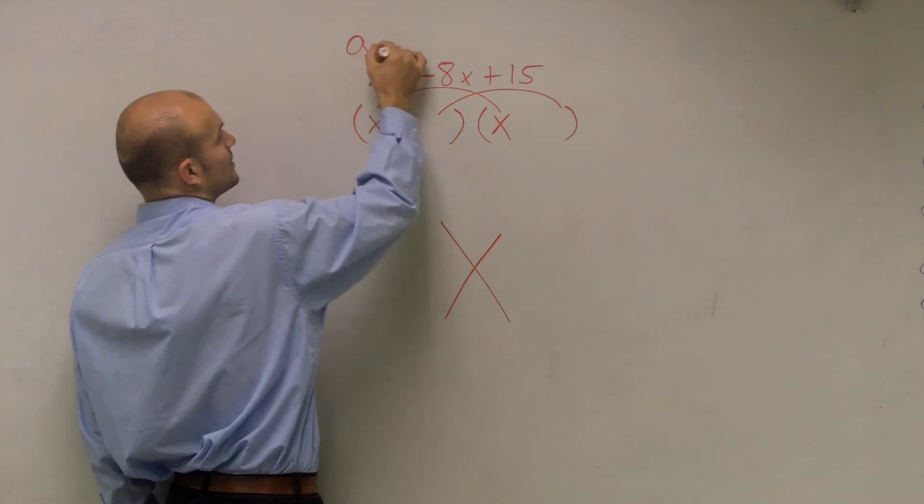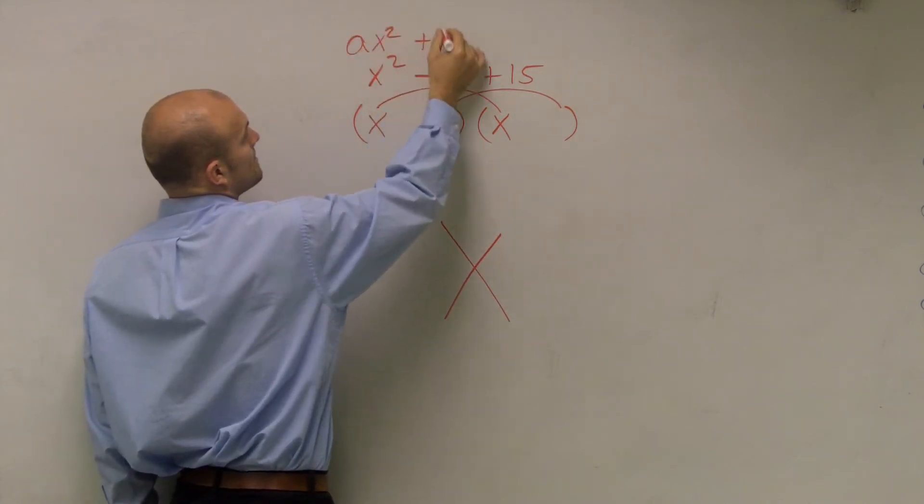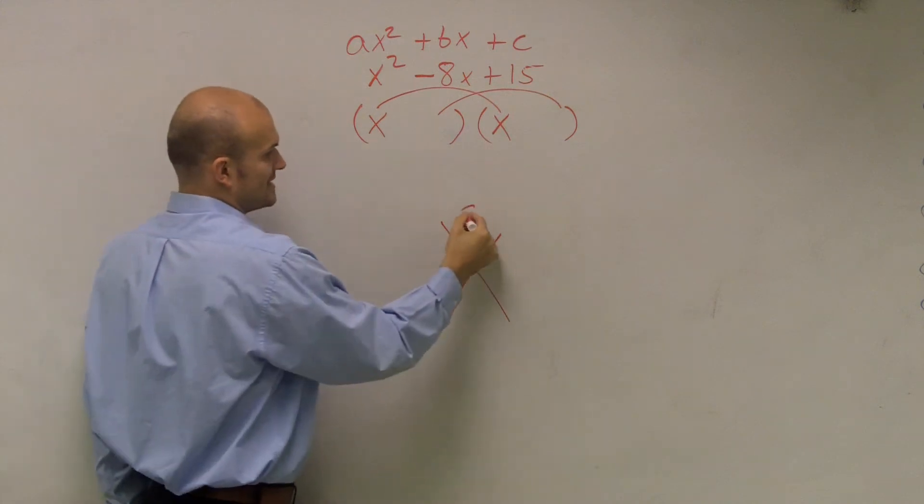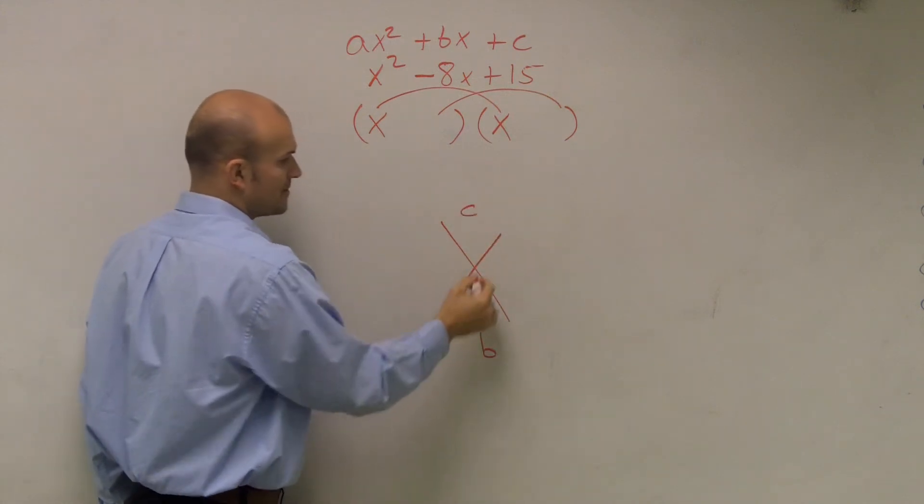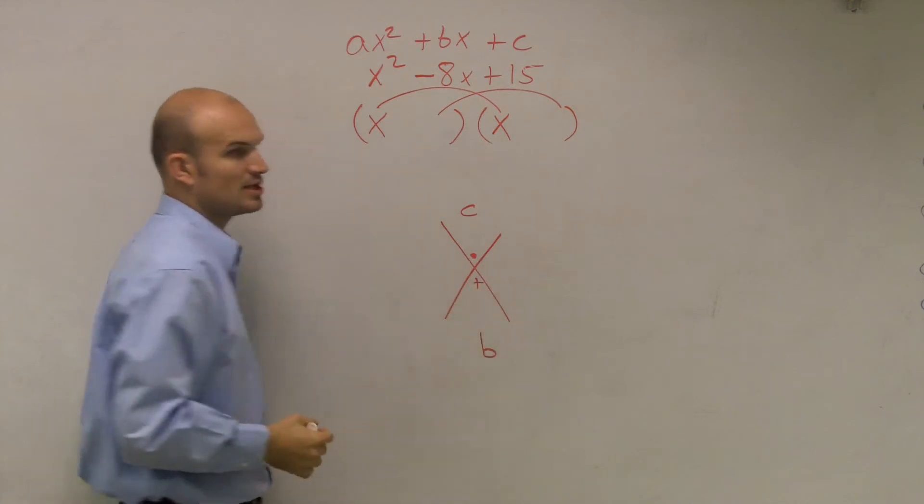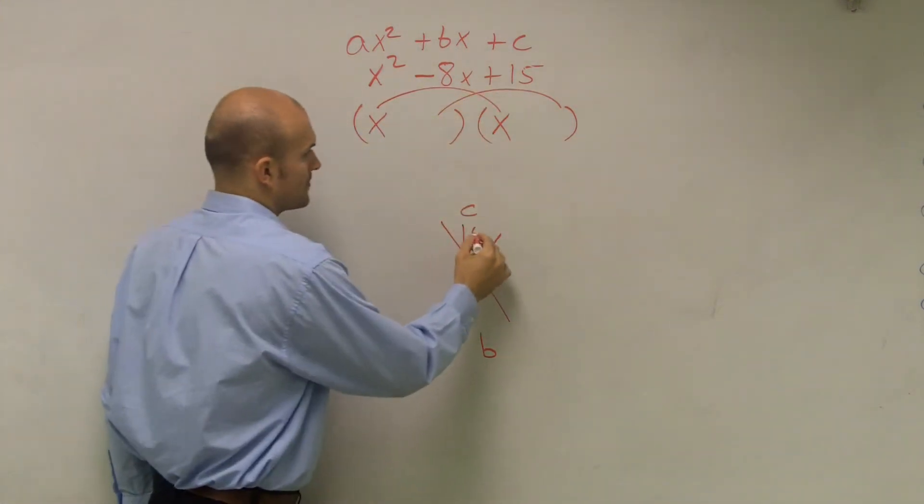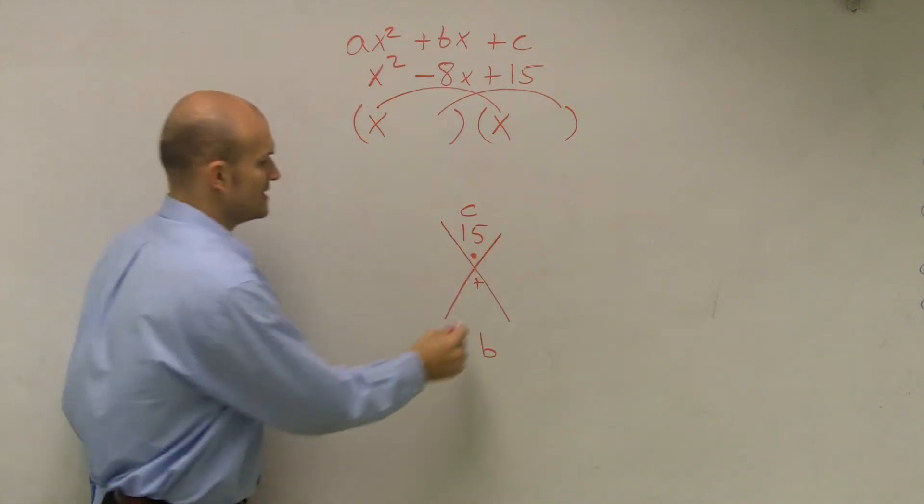So I gave you guys a little format to look at. And I told you, remember the quadratic form. So therefore, I told you to write c up here, b on the bottom, make a little dot for multiplication, and a plus for addition. So c was equal to 15, and b was equal to negative 8.